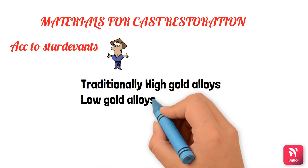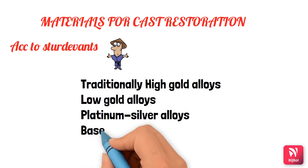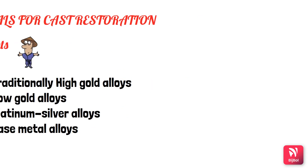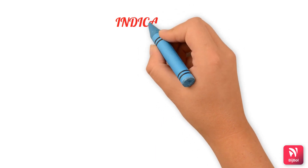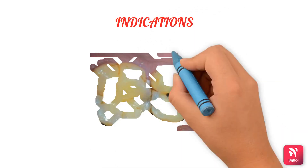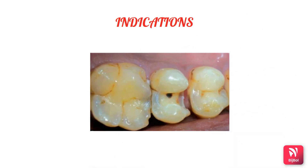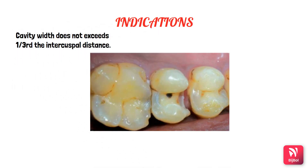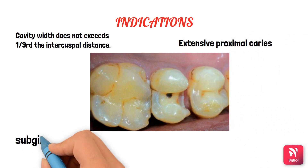Now we'll see the indications of cast restorations. For an inlay, it is indicated when the cavity width does not exceed one-third of the intercuspal distance, in cases of extensive proximal caries involving the buccal and lingual line angles, and when proximal margins extend subgingivally.